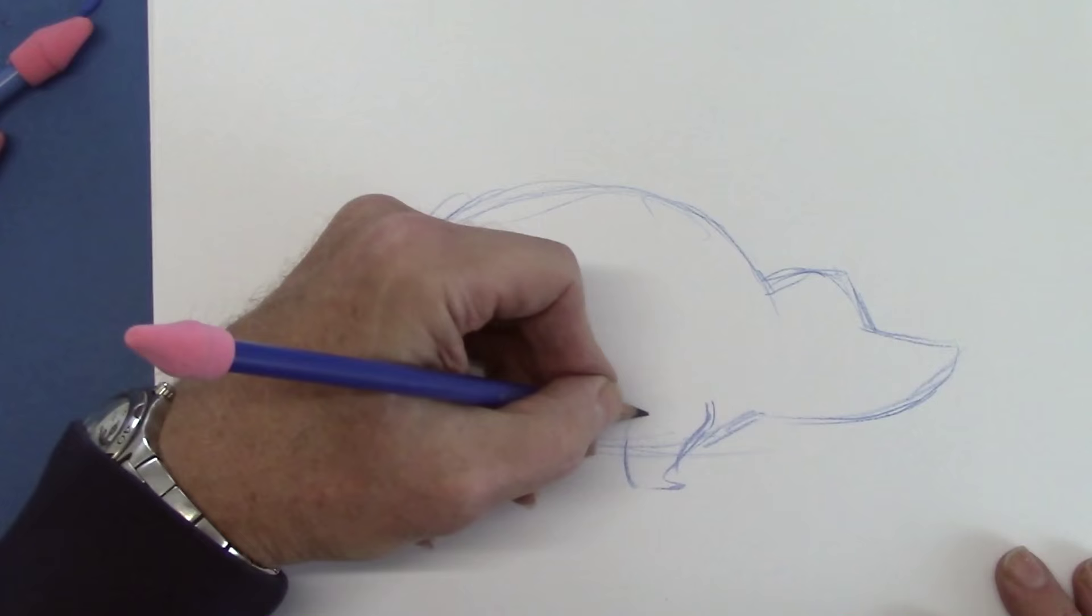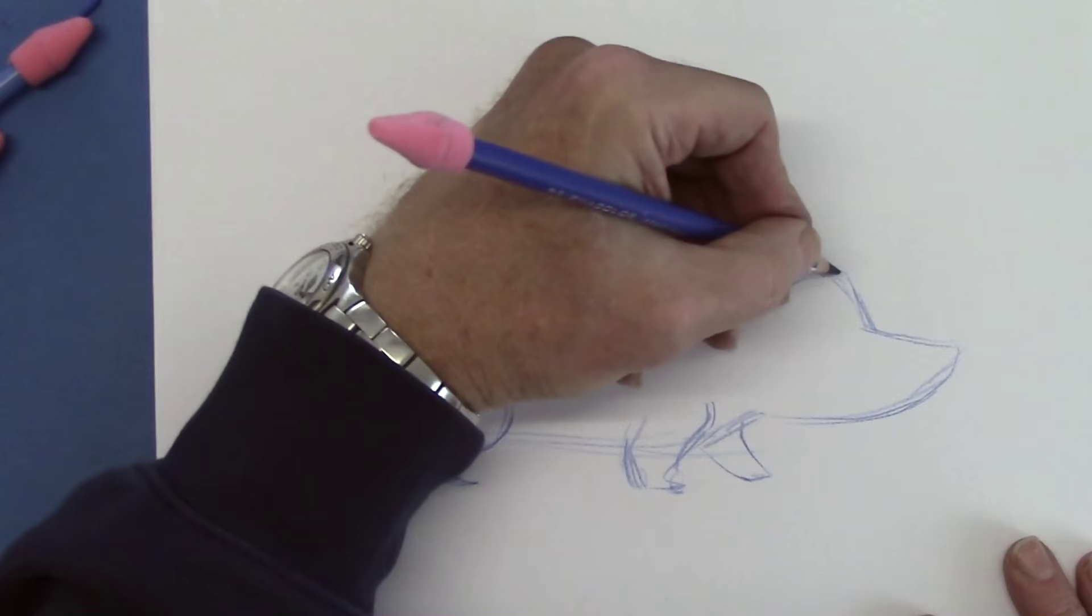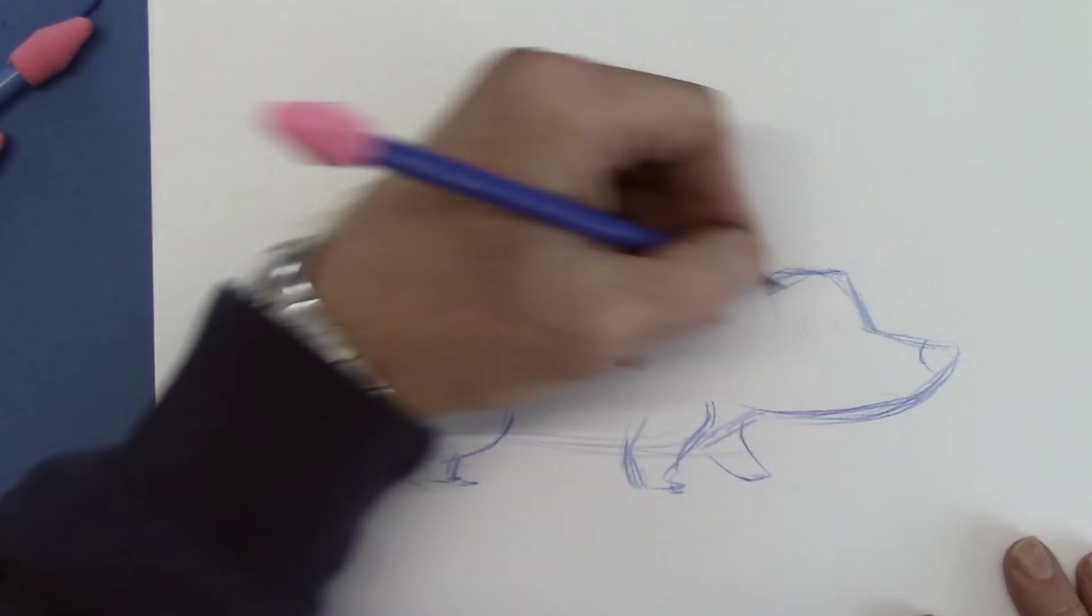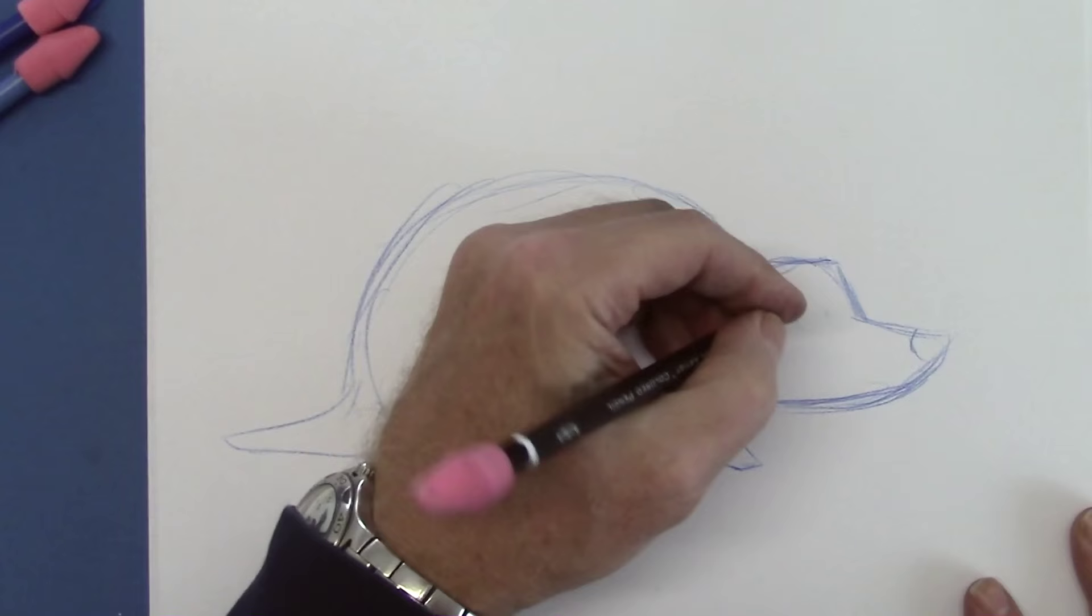So that looks good to me. I'm going to give them a real pointy nose. Okay, well let's get started. I think we're ready to give them a real face, and I'm going to change some of this as I go along, and you can too, or you can keep it the same, whatever works for you.